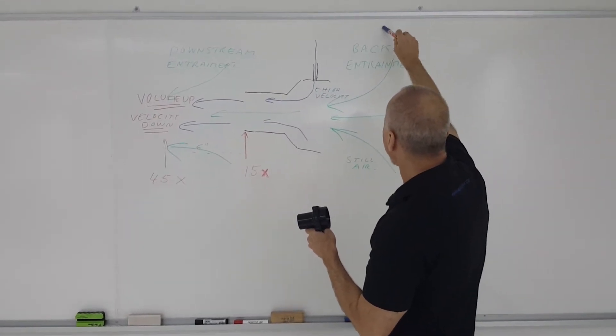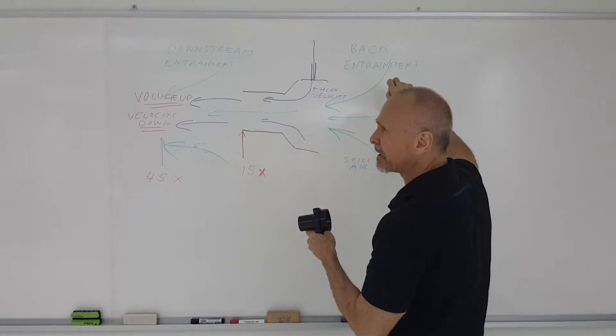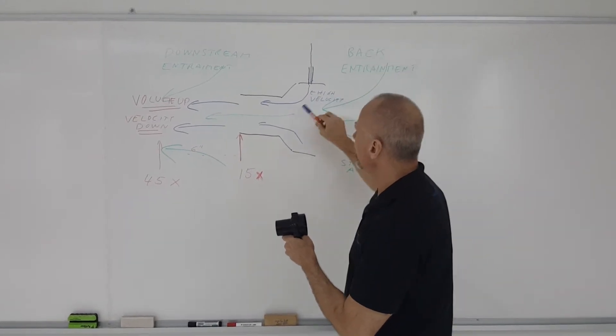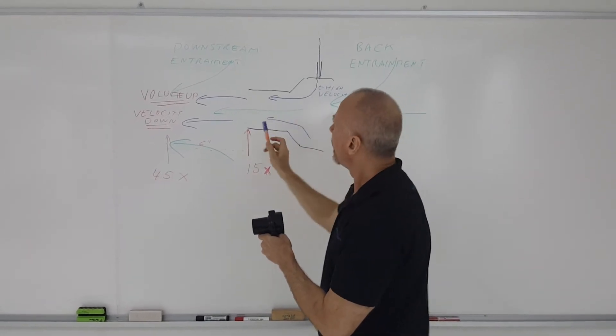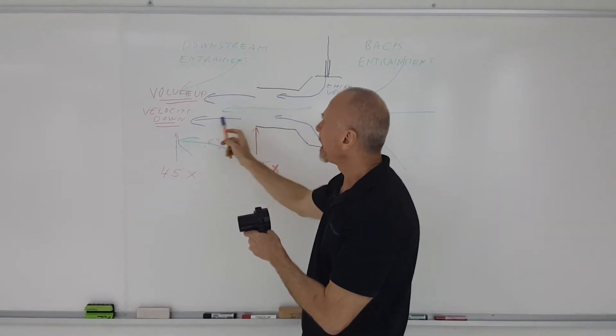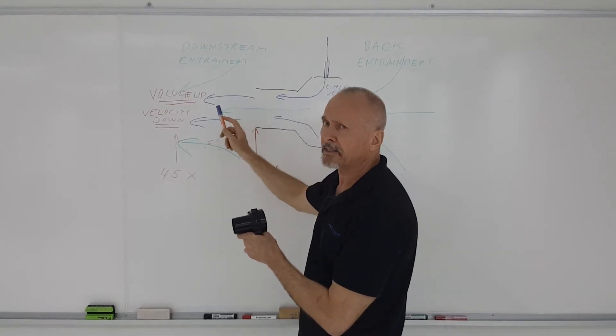the back air, which is still air, gets entrained from the rear, goes into the unit, mixes with the high velocity compressed air from the compressor, and comes out mixed as a higher volume with high velocity.